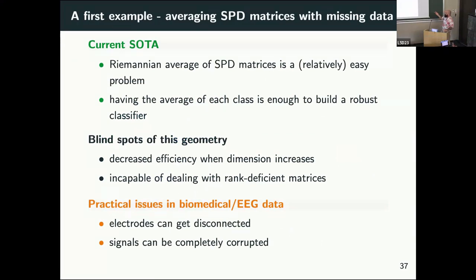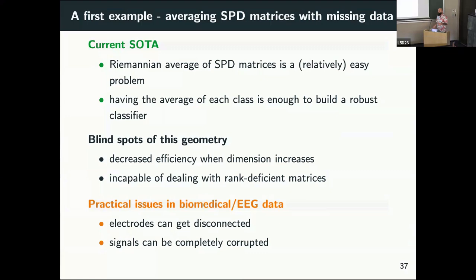As I said, SPD matrices appear in EEG data and it's the current state of the art for brain-computer interface. We know how to compute the Riemannian average of SPD matrices. If we compute the average on each class, we have a very simple classifier: we see where a new point is closest and predict that class. However, as the dimension increases or as the rank approaches being rank-deficient, the geometry becomes unstable — something that can happen a lot with EEG data.